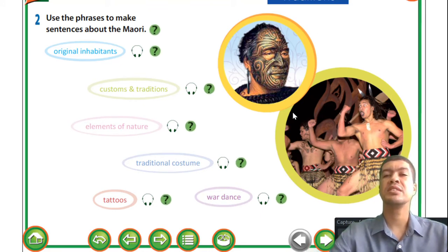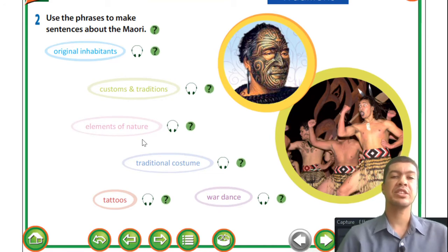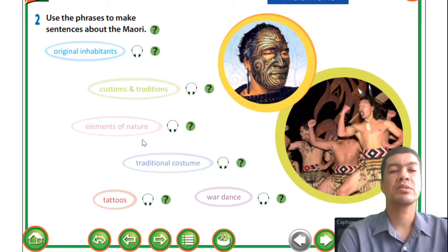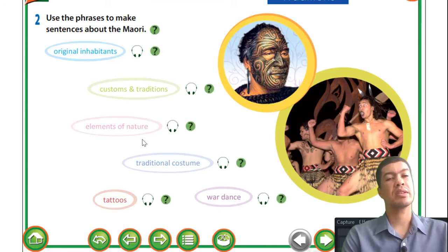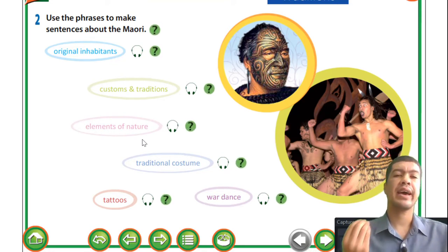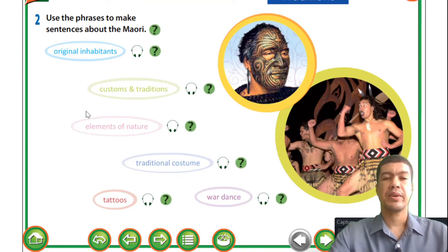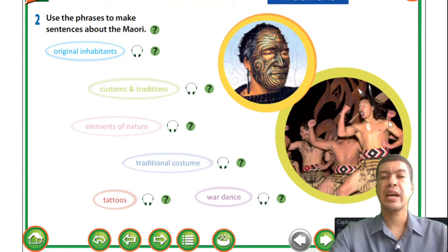Remember we are supposed to make sentences of these words. The next one is 'elements of nature' - when we talk about elements of nature we simply talk about earth, wind, fire and water. These are the elements of nature. Next - traditional costume. As you'll notice in the picture, the guy doing the Haka dance is wearing the traditional costume.